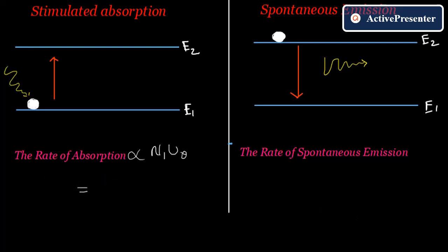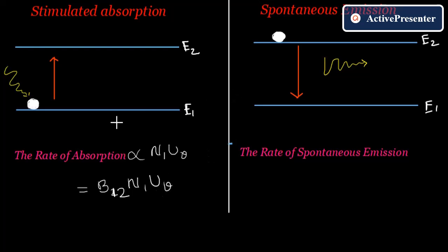Removing the proportionality using Einstein coefficient B12 — where '1 to 2' means the electron moves from ground state to higher state — the rate of absorption equals B12·N1·u(ν).